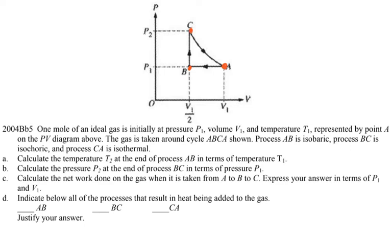Process AB is isobaric — constant pressure, so ΔP = 0. Process BC is isochoric or iso-volumetric, so ΔV = 0, meaning no volume change. Process CA is isothermal, so ΔT = 0 — temperature doesn't change.